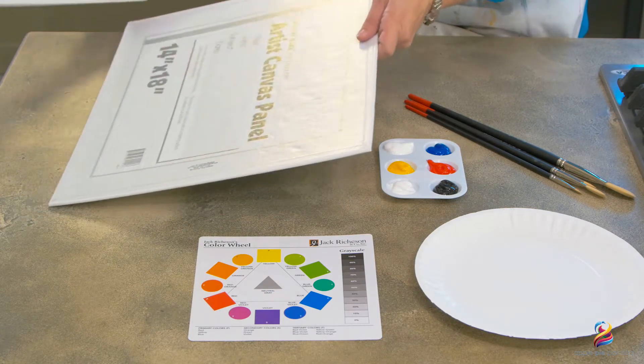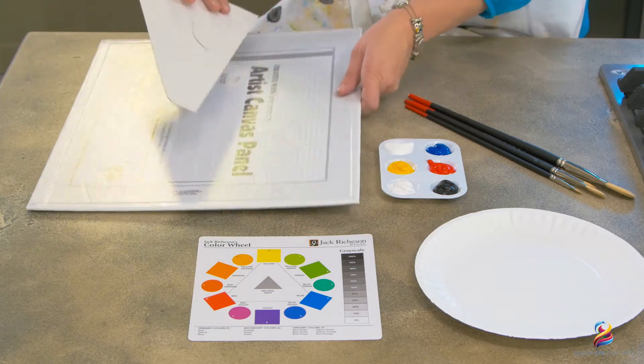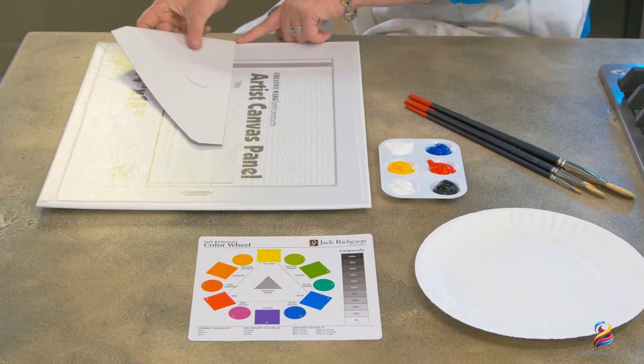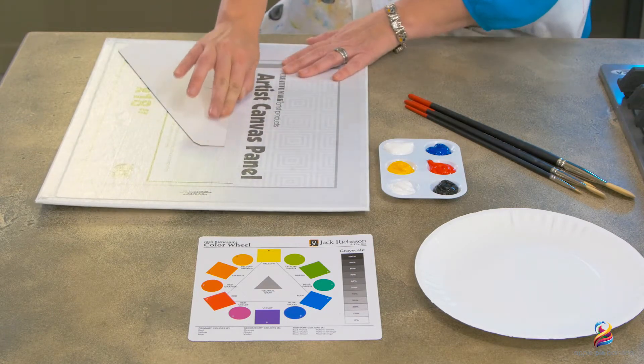Take your canvas and take one of the lines here and use the edge to align like this, and then right down at the bottom of the canvas, you'll line this up and quickly press it on.